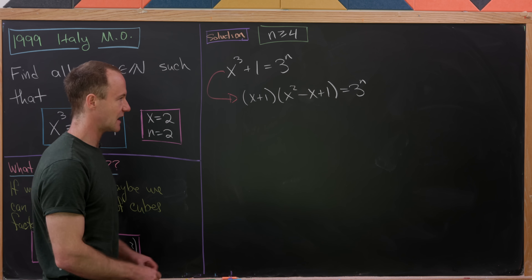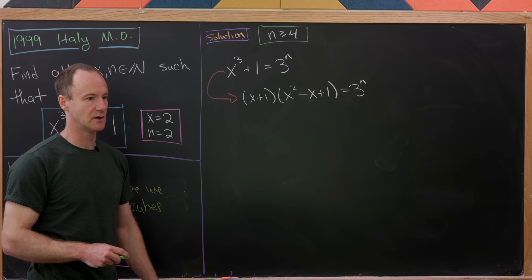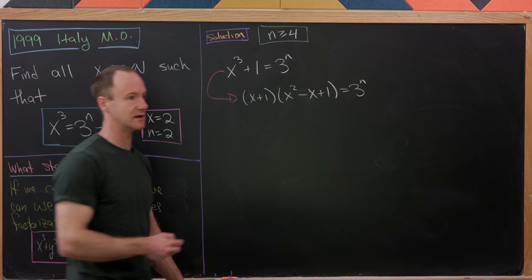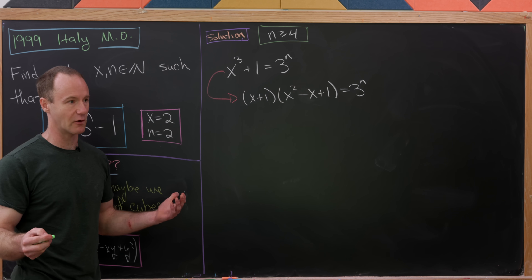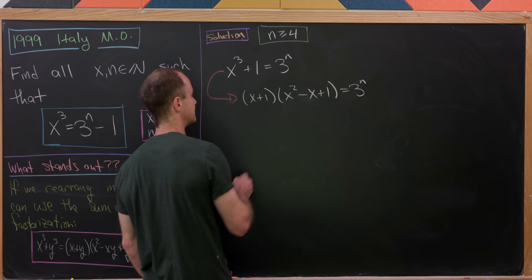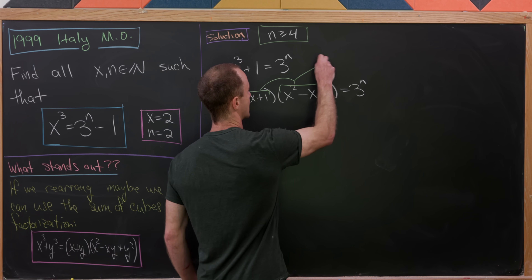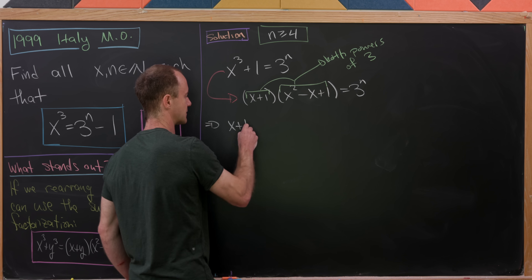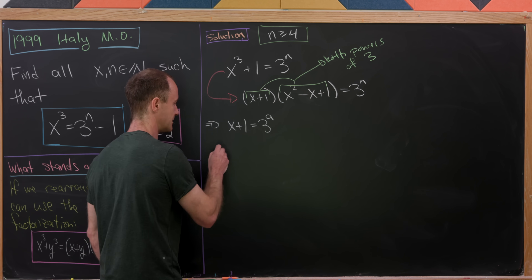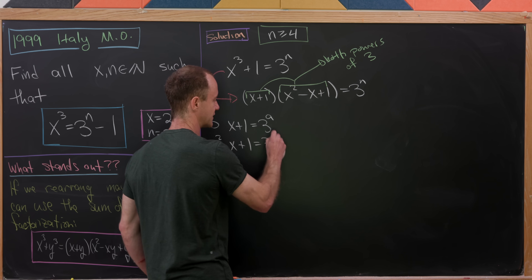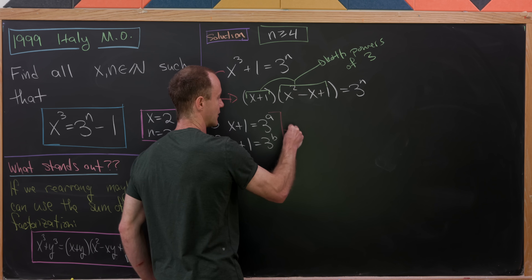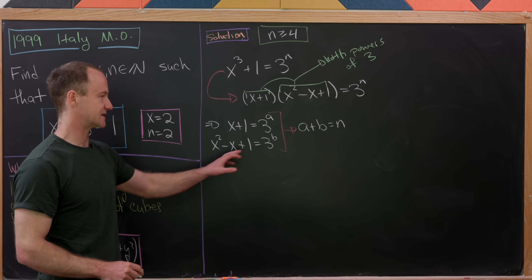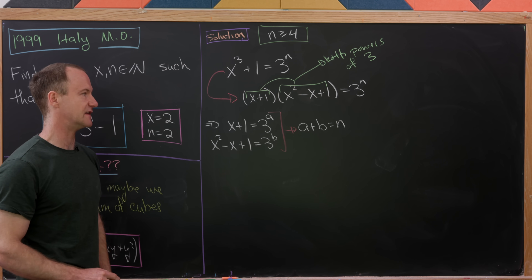The right-hand side is a power of the prime 3, so the left-hand side is also a power of 3. The only way to achieve a power of 3 is to multiply two powers of 3. That means both factors are powers of 3: x + 1 = 3ᵃ and x² - x + 1 = 3ᵇ, where a + b = n.